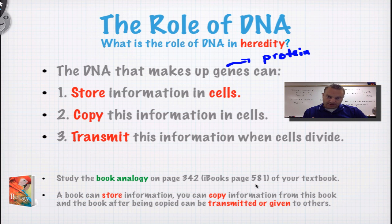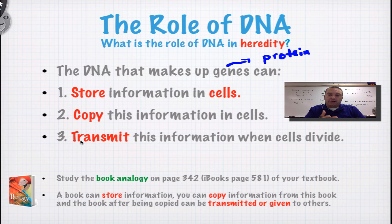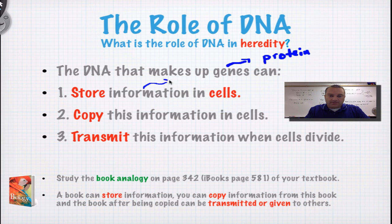It uses a book analogy. We're all familiar with books — back cover, front cover, stuff in the middle. A book can do these three things: it can store information — the pages of a book contain information; you can copy a book, either by hand or with a copier, and you'll have the exact same information; and then you can transmit the information in the book — you can hand the book to another person and they can read it and learn the same stuff that you did. DNA can do all of this.